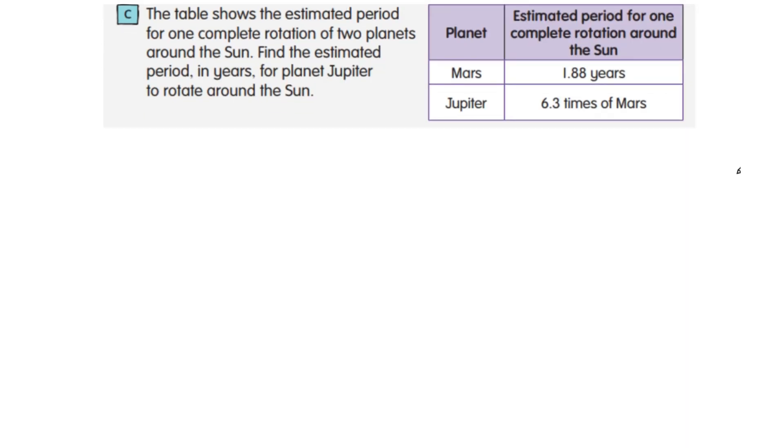The table shows the estimated period for one complete rotation of two planets around the sun. Find the estimated period in years for planet Jupiter to rotate around the sun. The estimated period that Jupiter will take is 6.3 times Mars.